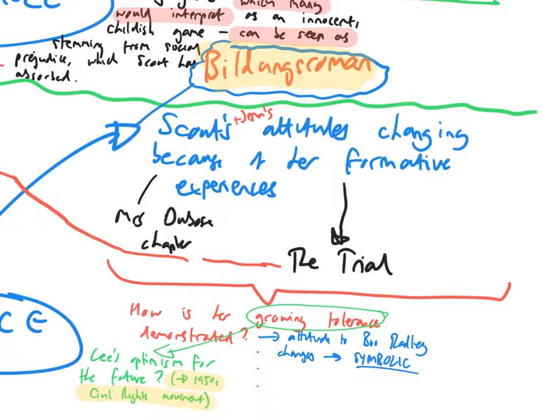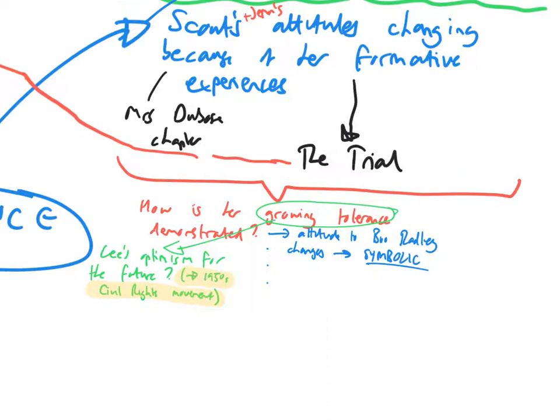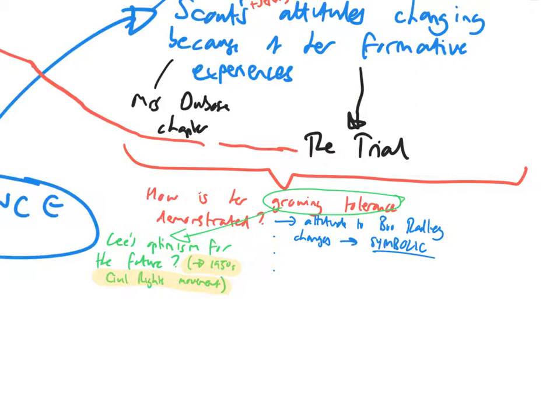We know, of course, that the trial is an enormous lesson for Scout, a very formative experience. You could talk a lot about the events in the trial and how these change her. But, of course, how is her growing tolerance demonstrated consistently throughout the novel?